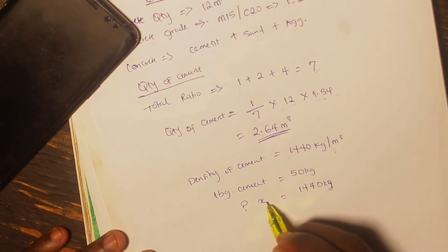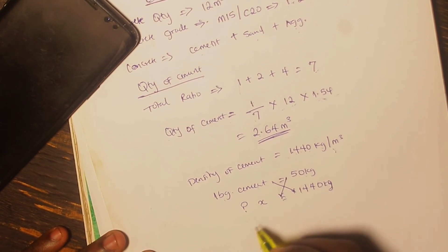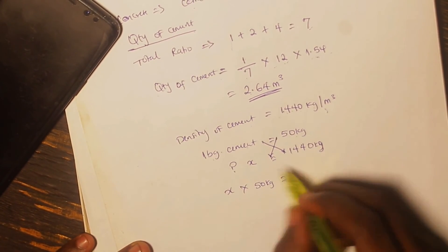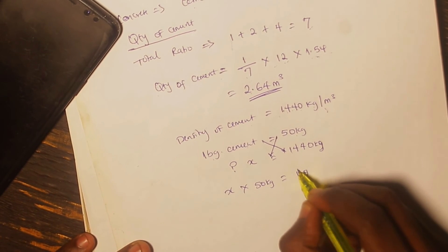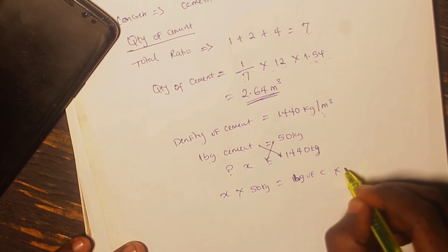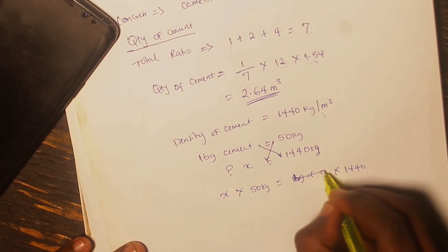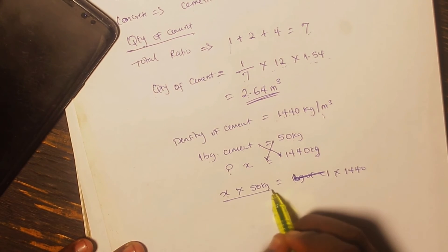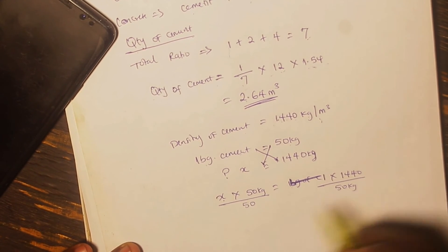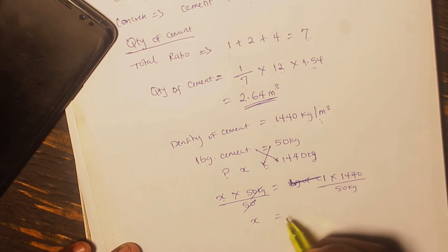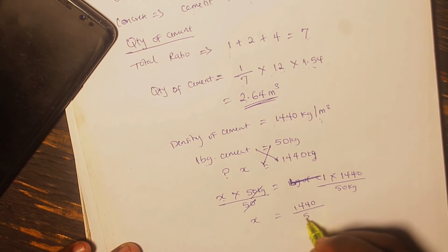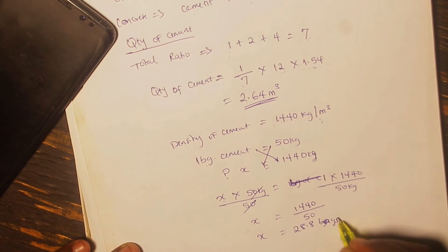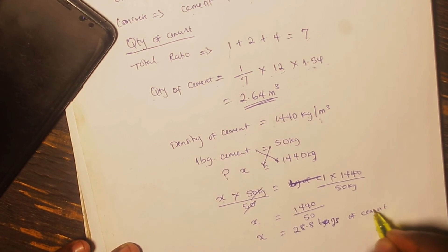One bag of cement — in Nigeria, whether Dangote or BUA or whatever brand — is equal to 50 kg. So if 1 bag of cement is equal to 50 kg, how many bags of cement will we get from 1,440 kg? Because the density of cement is 1,440 kg per cubic meter. Using basic cross-multiplication, X multiplied by 50 kg equals 1 bag multiplied by 1,440. Dividing both sides by 50 kg, the number of bags of cement becomes 1,440 over 50, which equals 28.8 bags of cement.